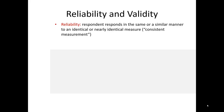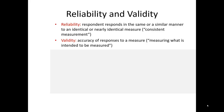Next, let's introduce the concepts of reliability and validity and how they apply to data collection and marketing research. Reliability is when a respondent responds in the same or similar manner to an identical or nearly identical measure — in other words, it's consistent. Validity, on the other hand, is the accuracy of a response to a measure — when we say we're measuring something, we really are indeed measuring that thing. Oftentimes when it comes time to illustrate reliability and validity, it's done by way of a target.